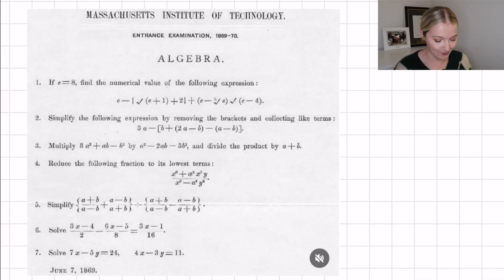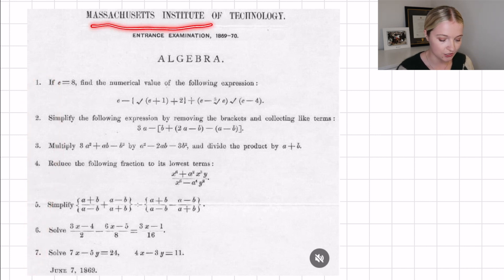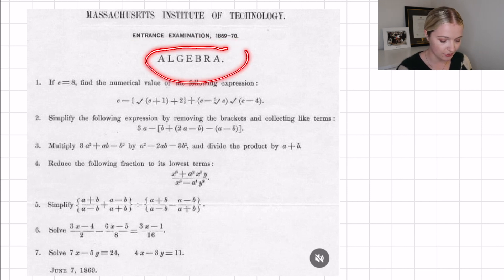Cool, so this is the paper right here. It is seven questions. It is the Massachusetts Institute of Technology, so MIT, an entrance exam from 1869 to 1870, and it is the algebra section.